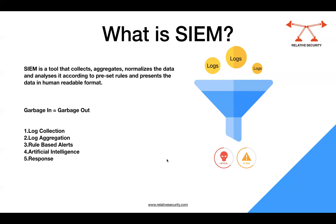SIEM collects and puts all logs and other data from endpoints and the network into a centralized place for analysis. Some solutions have started adding techniques like machine learning and behavioral analytics to identify suspicious network traffic. However, the limitation with SIEM is that countermeasures are typically limited to just pushing alerts to the SOC — it cannot automatically respond to threats.